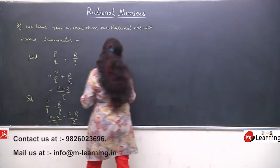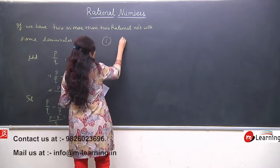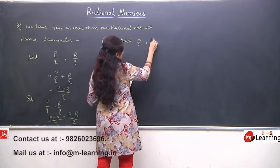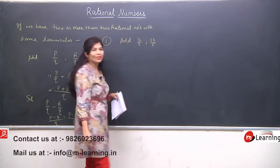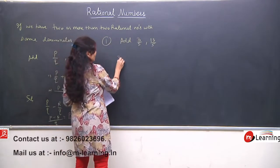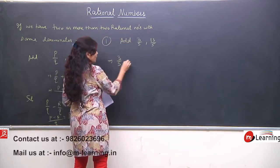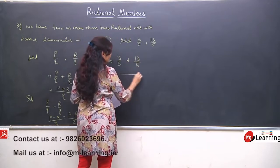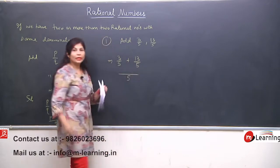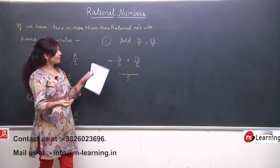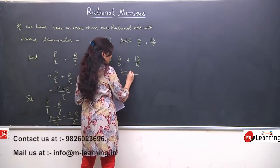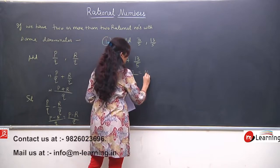Now I am taking some questions. First is add 3 by 5 and 13 by 5. We will add 3 by 5 plus 13 by 5. These are very simple questions but we have to go to integers, so we need to take these. The numerators plus, so answer will be 16 upon 5.